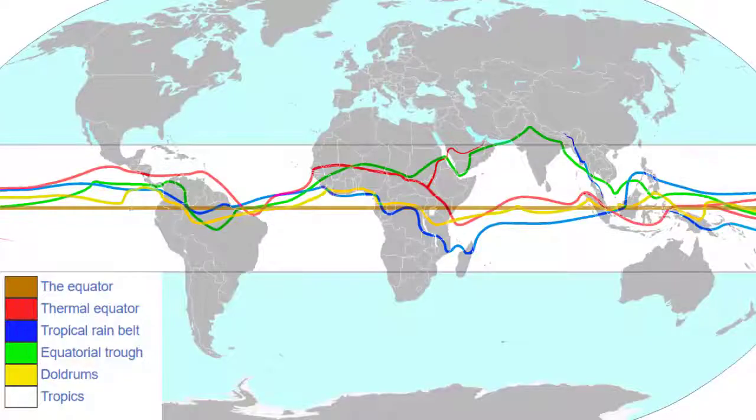I particularly look at rainfall in the tropics and the tropical rainfall belt, or the intertropical convergence zone. This is part of a large global circulation and we're trying to work out how it has changed over the last 400 years and how that is likely to feed into future climate changes as well.